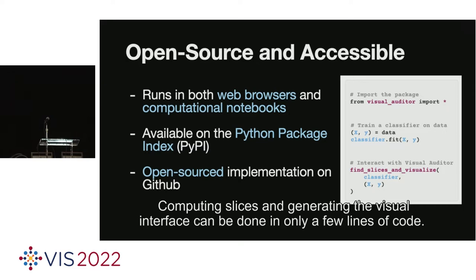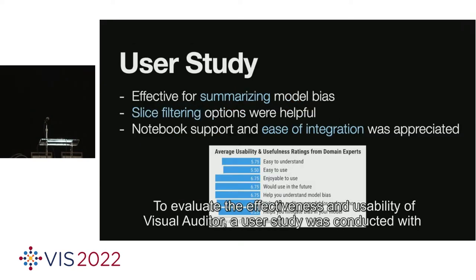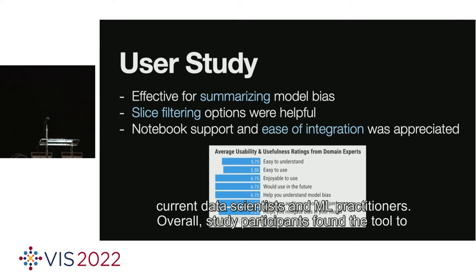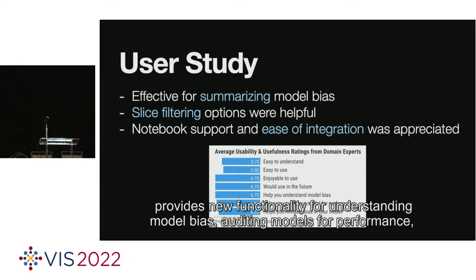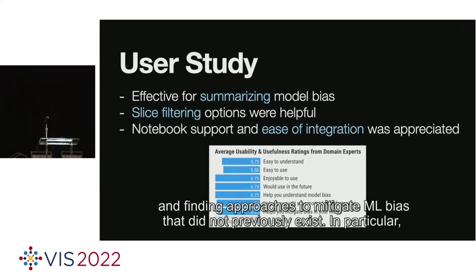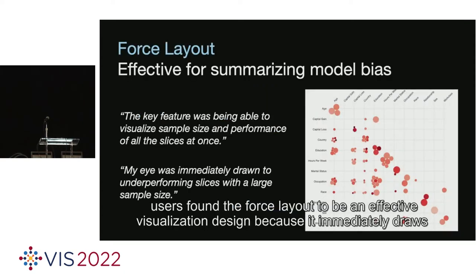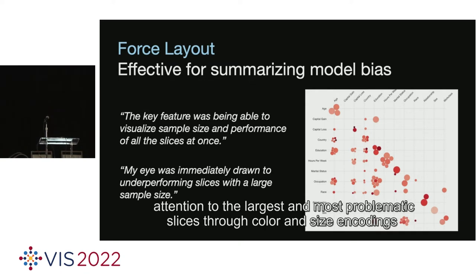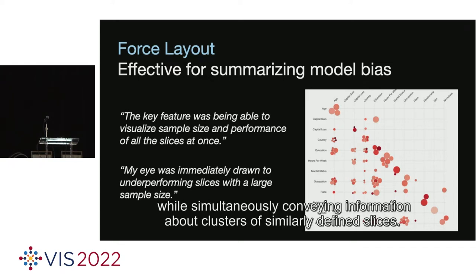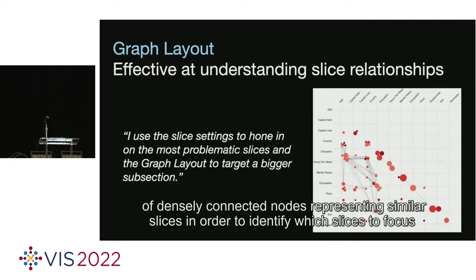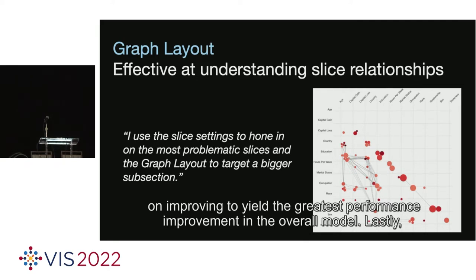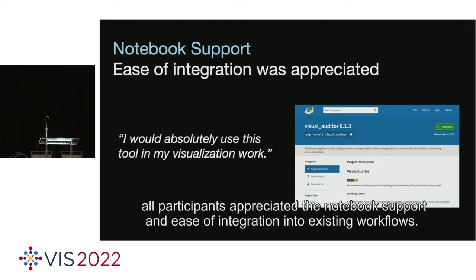Computing slices and generating the visual interface can be done in only a few lines of code. To evaluate the effectiveness and usability of Visual Auditor, a user study was conducted with current data scientists and ML practitioners. Overall, study participants found the tool to be easy to understand and enjoyable to use. Domain experts agreed that Visual Auditor provides new functionality for understanding model bias, auditing models for performance, and finding approaches to mitigate ML bias. Participants also found the graph layout insightful for identifying which slices to focus on to improve overall model performance. All participants appreciated the notebook support and ease of integration into existing workflows.